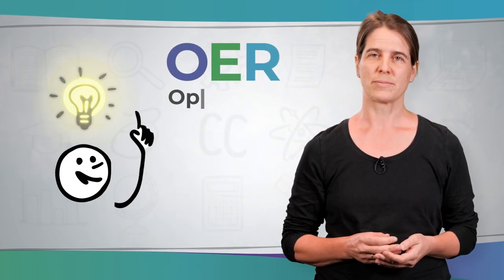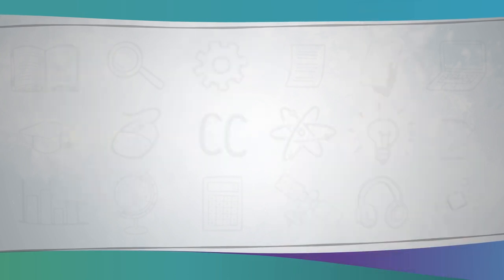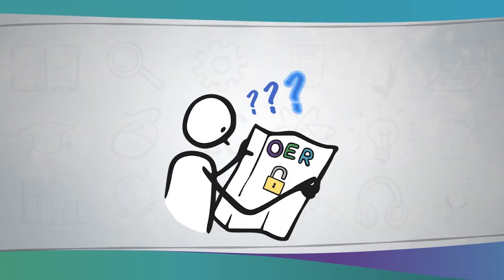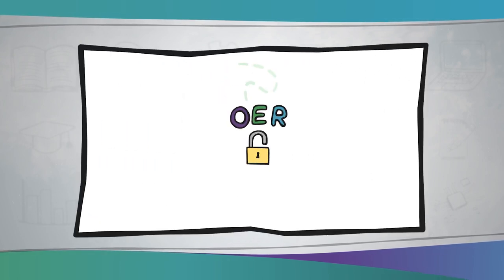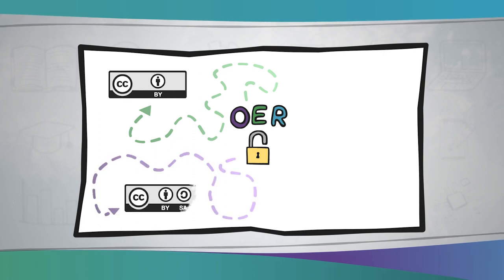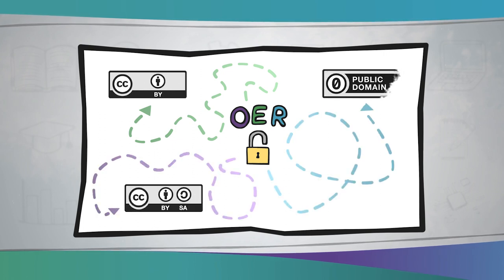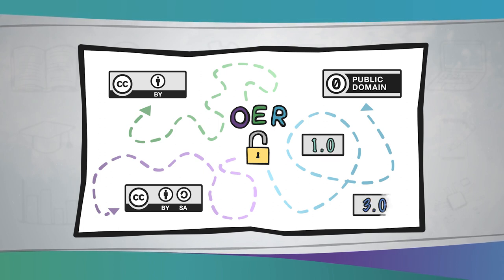You've already discovered an open educational resource that you'd like to use. This video is about exactly that — how can you use a resource made available under an open license? All of the following applies to materials made available under a CCBY, CCBYSA, or CC0 license, regardless of the version number, for example 1.0 or 3.0.